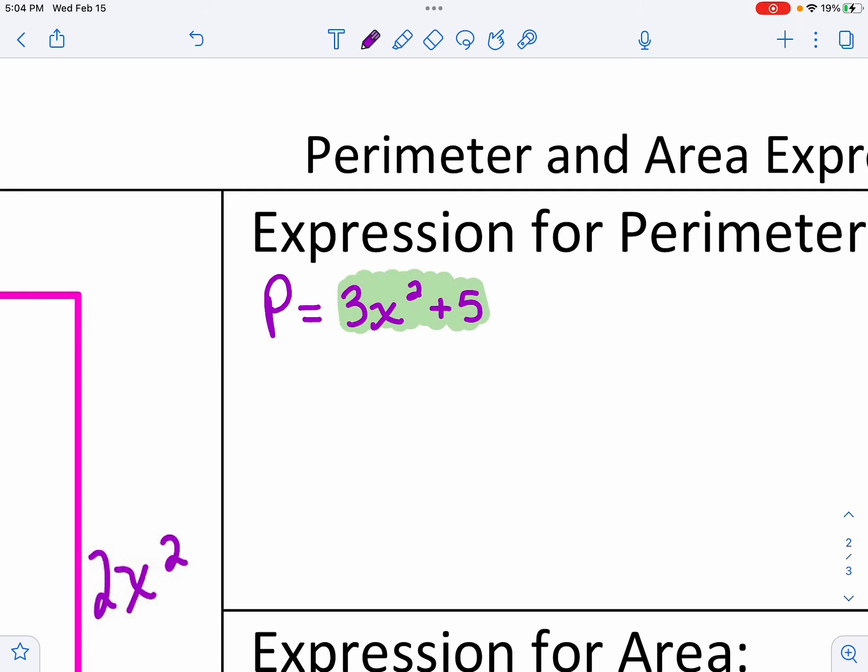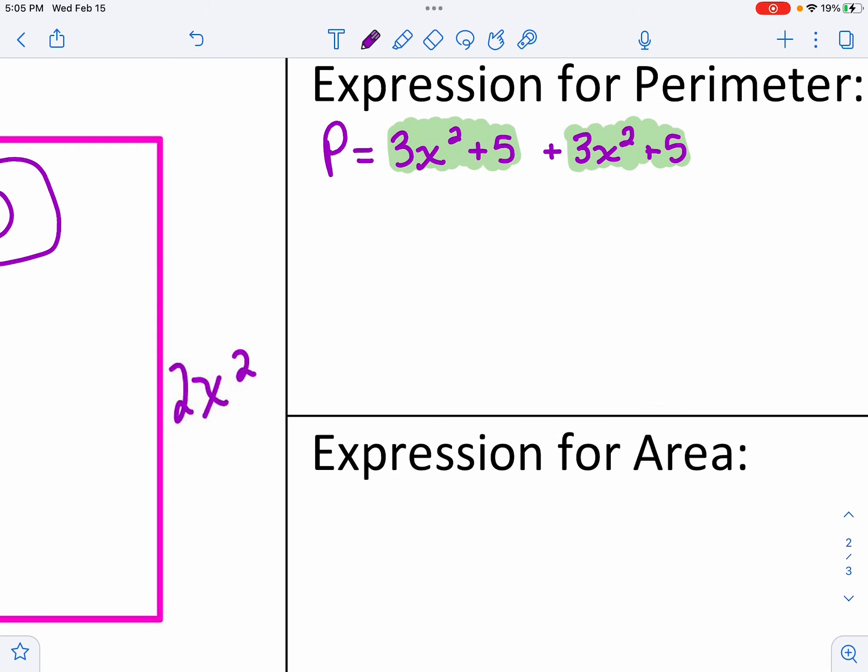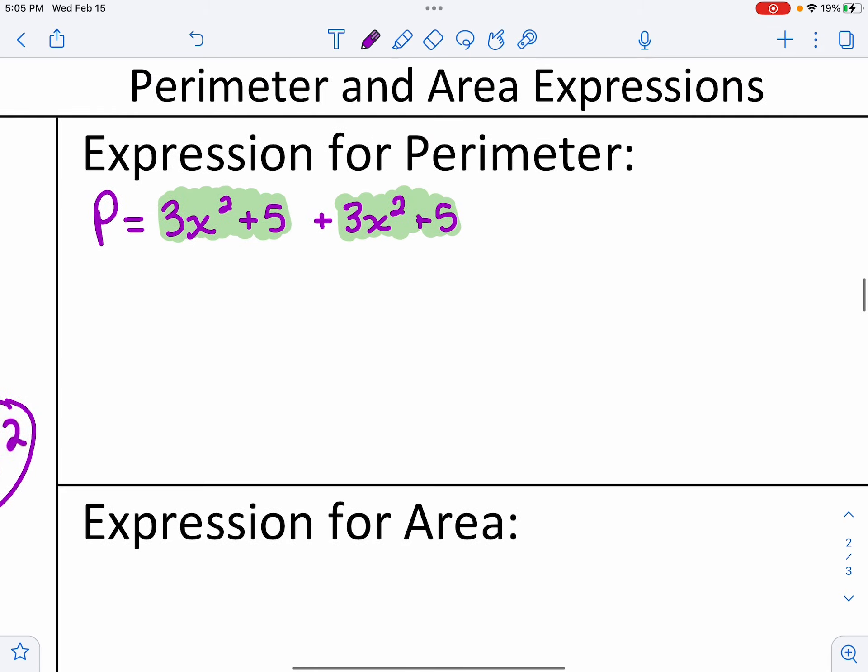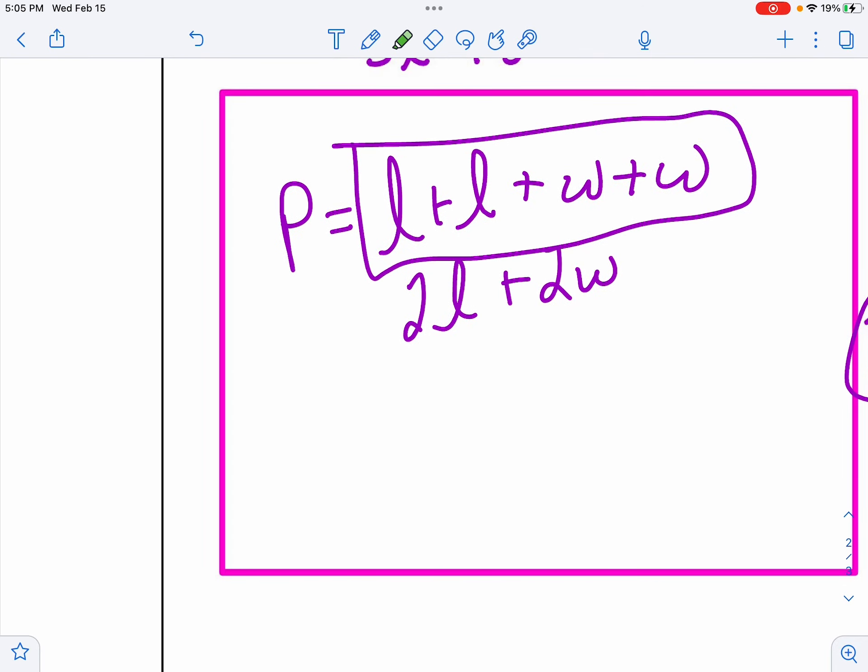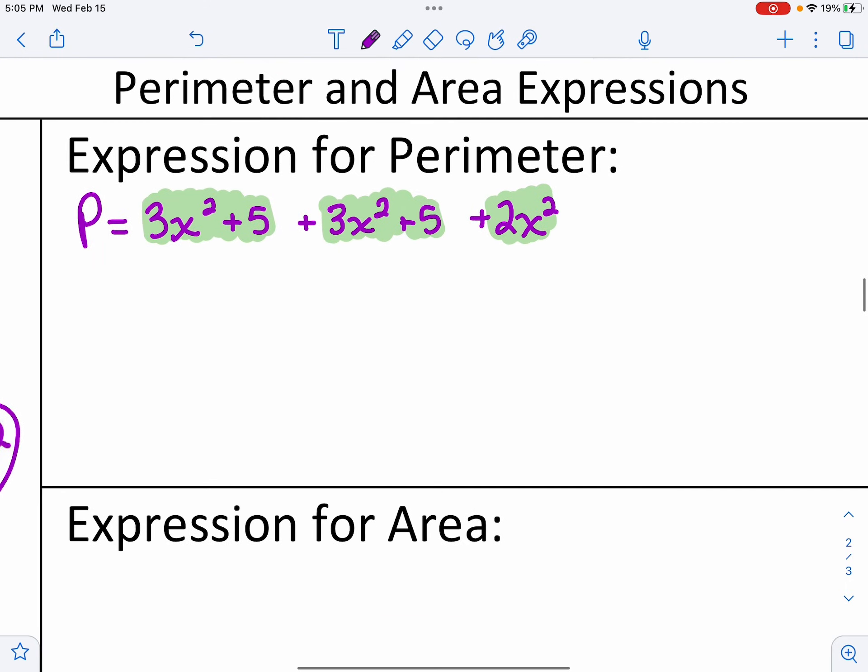So 3x squared plus 5. What I'm going to do is highlight that because that's just one length. Remember I have another length down below. So another adding 3x squared plus 5. And maybe some of you already know you're just going to double that, which is what happens. Now let's get the width. The other one is 2x squared. And the other side of this rectangle will be the same. It'll be another 2x squared.